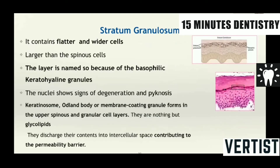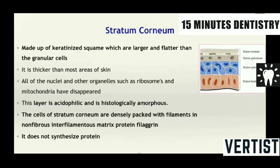Then comes the next layer of stratum granulosum where the cells are flatter and wider. They are larger than the spinous cells. They are called so because of the basophilic keratohyaline granules. These keratohyaline granules are keratinosomes. The Odland body or membrane coating granules, which are formed in the upper layer, are glycolipids. And because of this, the stratum granulosum is said to be contributing to the permeability barrier because these granules discharge their content into the intercellular spaces and create a barrier there.